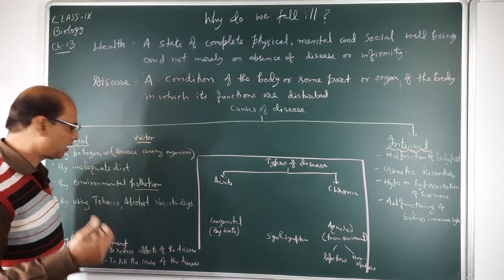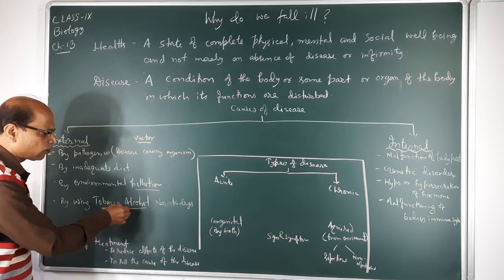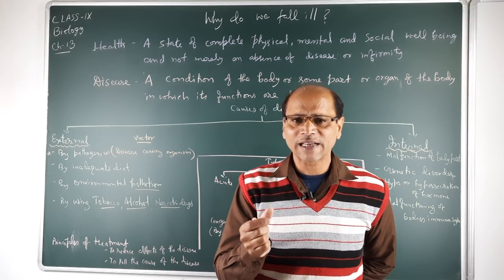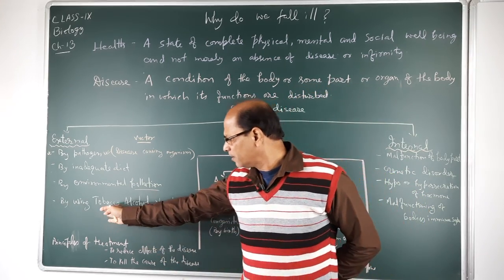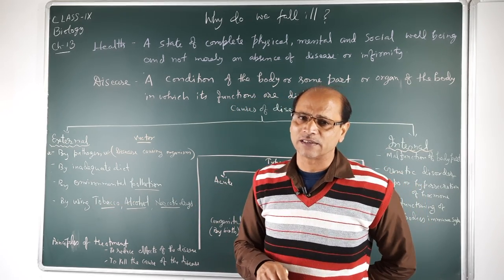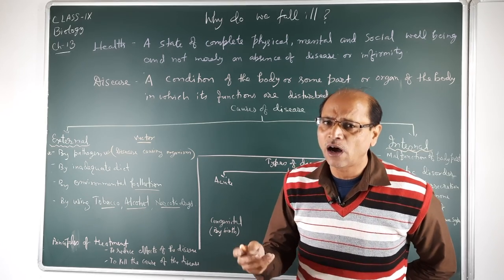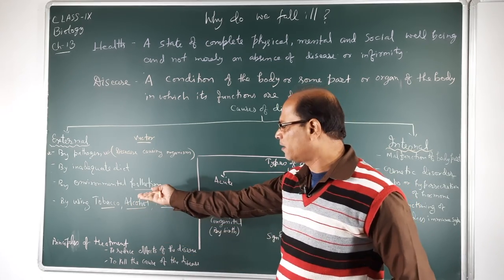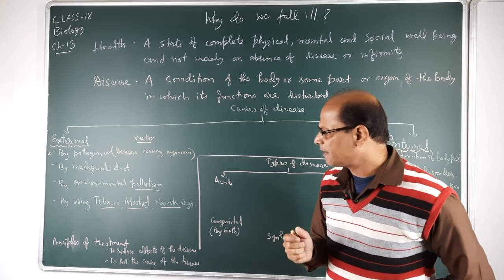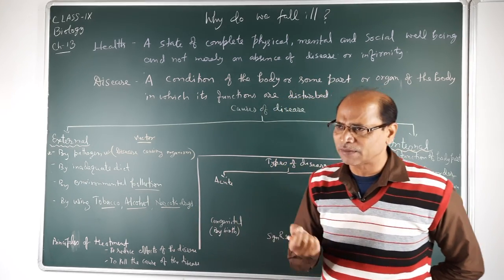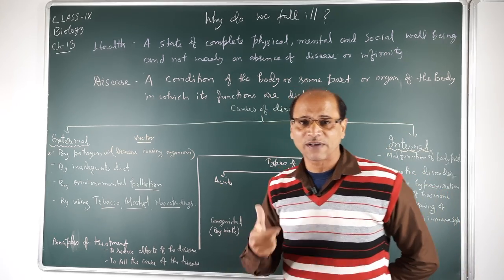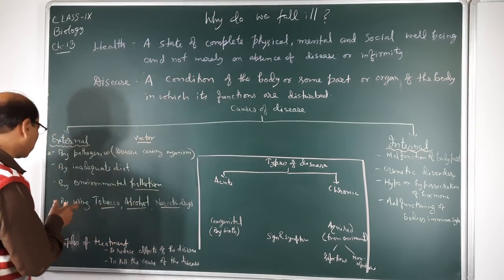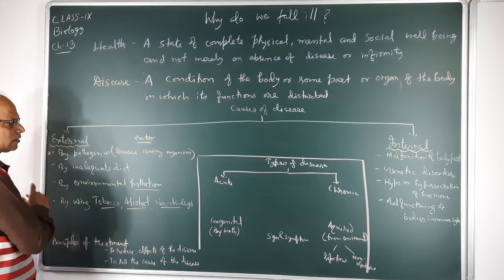Bad habits such as chewing tobacco, drinking alcohol, and taking narcotic drugs can cause disease. Initially people think these are good for them, but ultimately they damage the liver, the mouth through tobacco chewing, and narcotic drugs damage the nervous system and can cause paralysis. These are external factors that damage our health.